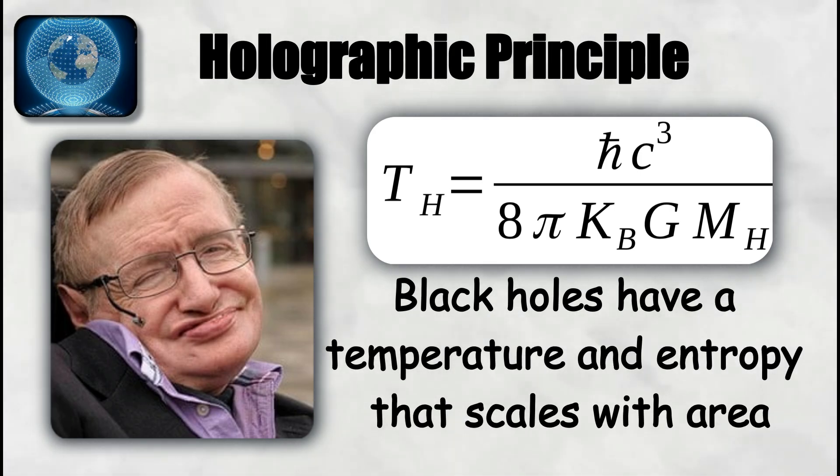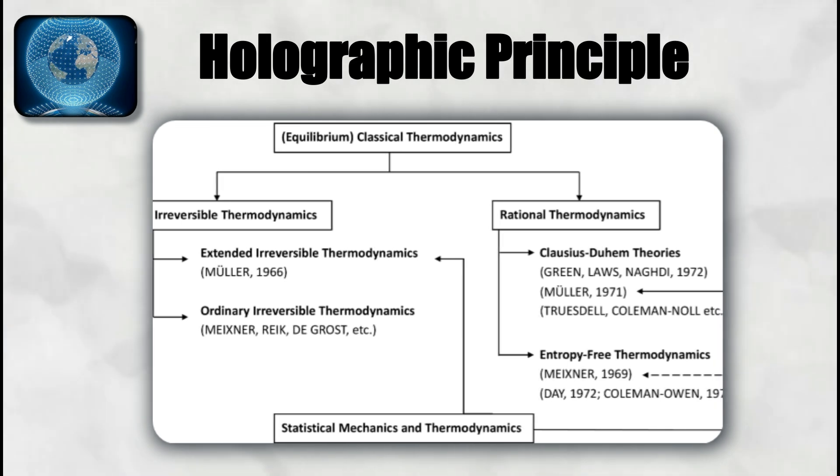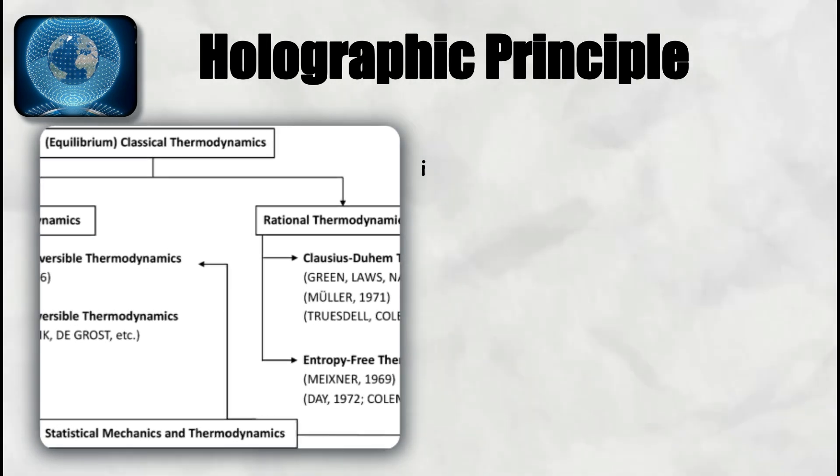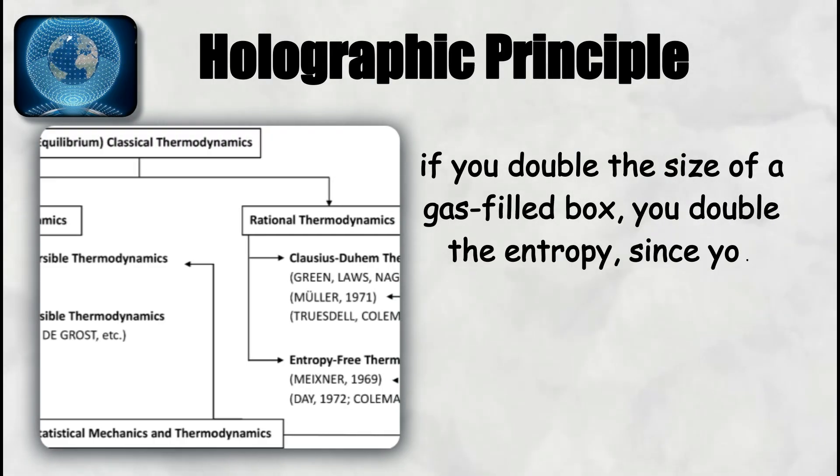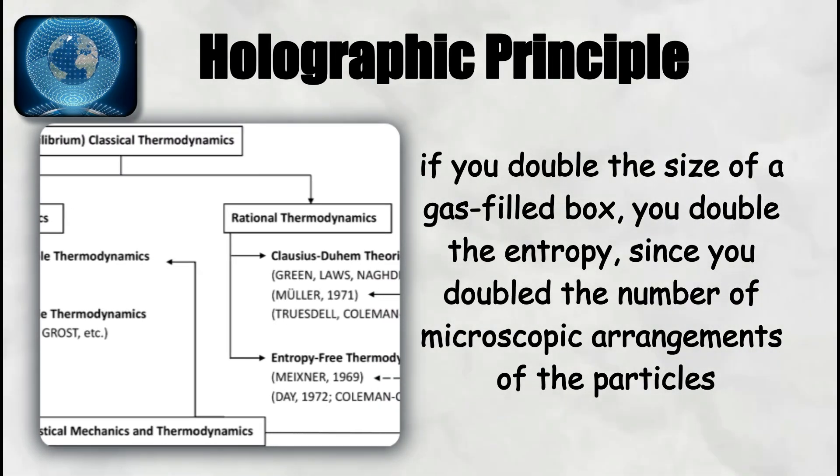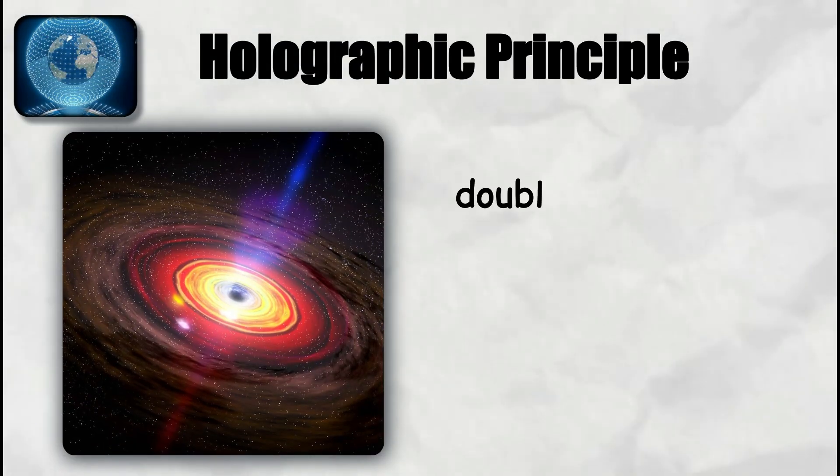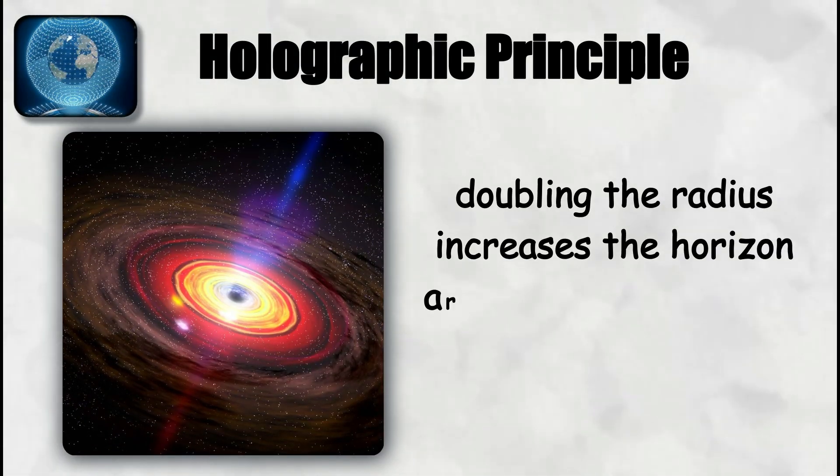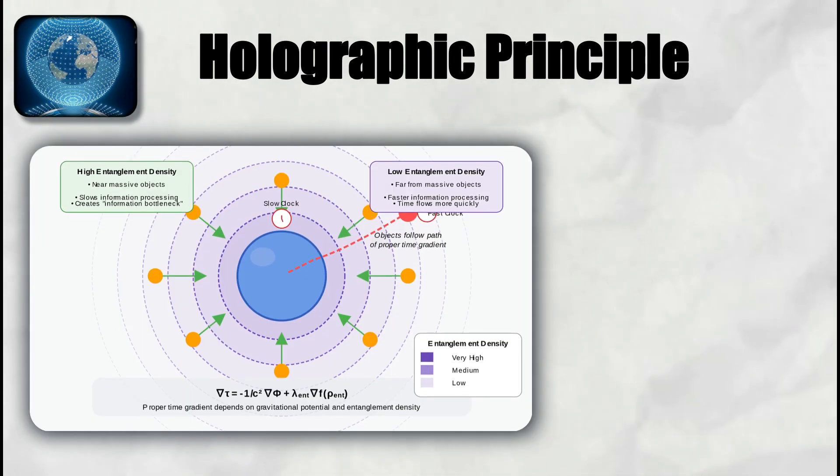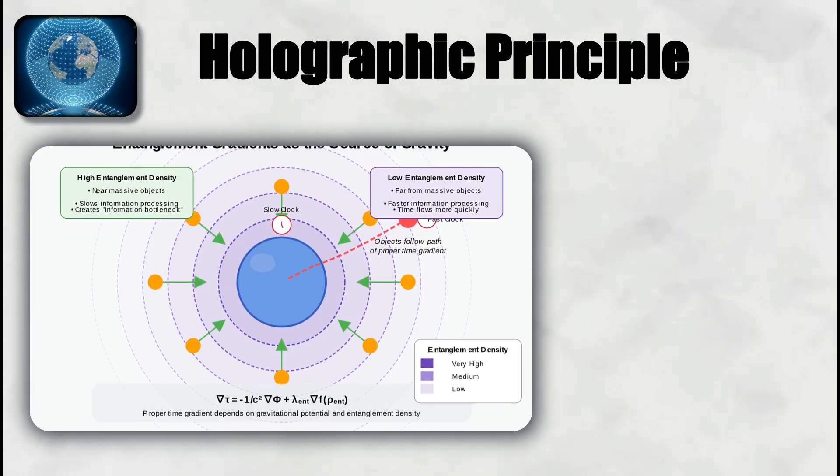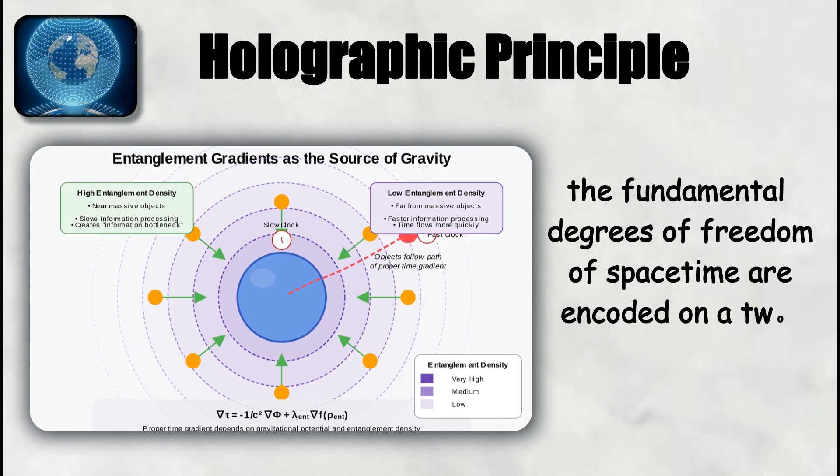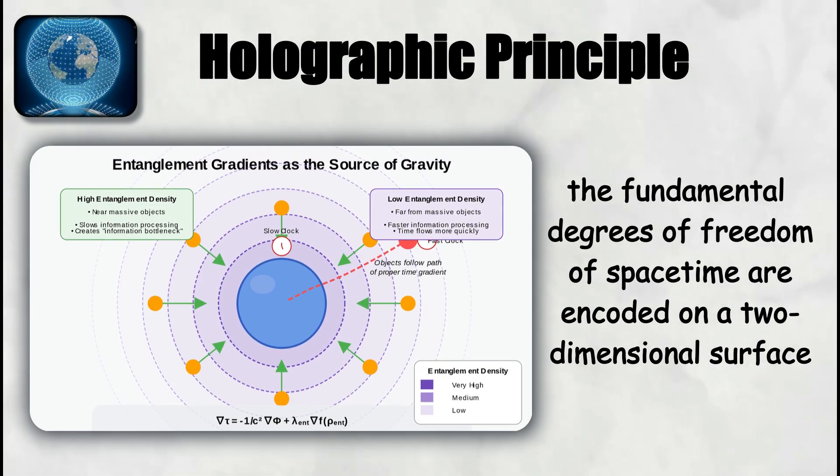This area law is unusual. In ordinary thermodynamics, entropy usually scales with volume. For example, if you double the size of a gas-filled box, you double the entropy, since you doubled the number of microscopic arrangements of the particles. But for a black hole, doubling the radius increases the horizon area by four, while the enclosed volume grows by eight. The entropy grows with the surface area, not the volume, which suggests that the fundamental degrees of freedom of spacetime are encoded on a two-dimensional surface.